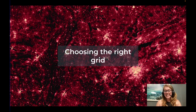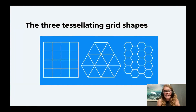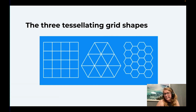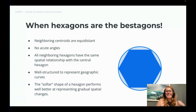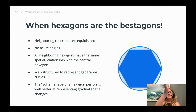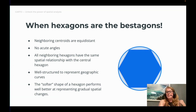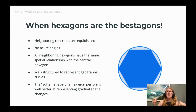So, are hexagons always the best option? There are three shapes you can use for an equal-area, equal-shape grid — the reason there are only three is because only three shapes tessellate, meaning they fit together without any gaps: squares, triangles, and hexagons. The centroid of the central hexagon is the same distance to the centroid of every neighboring hexagon, whereas with a triangle or square that distance varies depending on the neighborhood relationship.